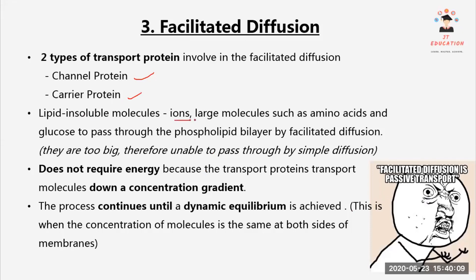Lipid insoluble molecules like ions, large molecules, amino acids and glucose, they pass through the phospholipid bilayers by facilitated diffusion. Because their size is too big, therefore they are unable to pass through by simple diffusion.